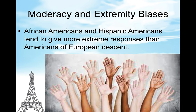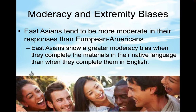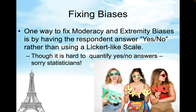African Americans and Hispanic Americans tend to give more extreme responses than Americans of European descent. East Asians tend to be more moderate in their responses than European Americans. East Asians show a greater moderacy bias when they complete the materials in their native language than when they complete them in English. One way to fix moderacy and extremity bias is by having the respondent answer yes or no rather than using a Likert-type scale, though it is hard to quantify yes and no answers.